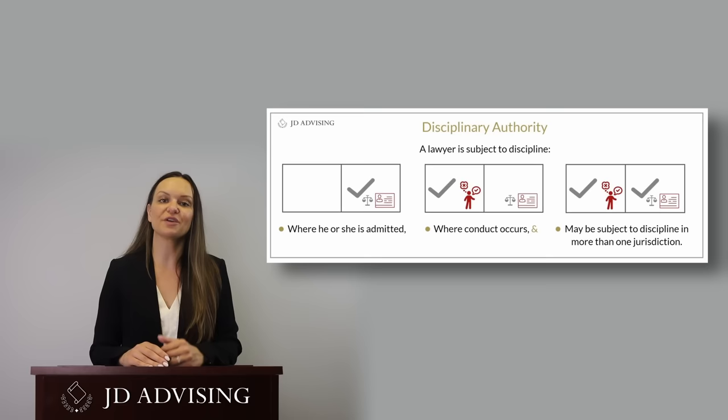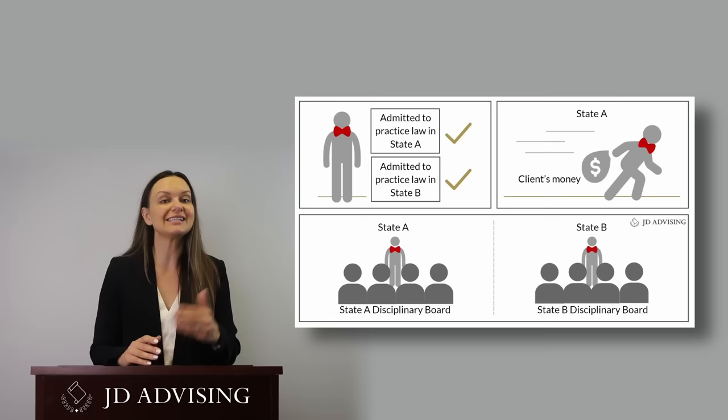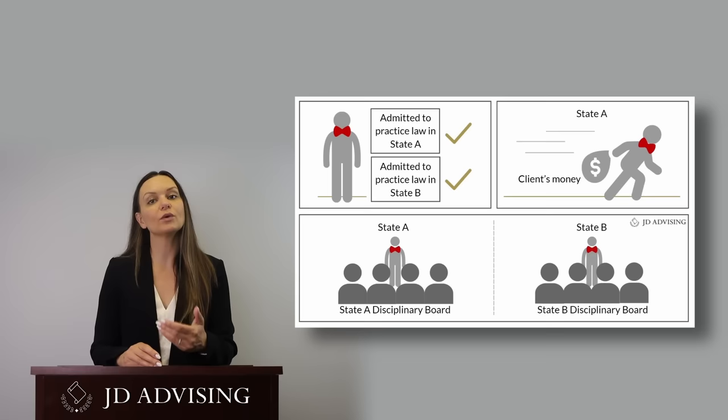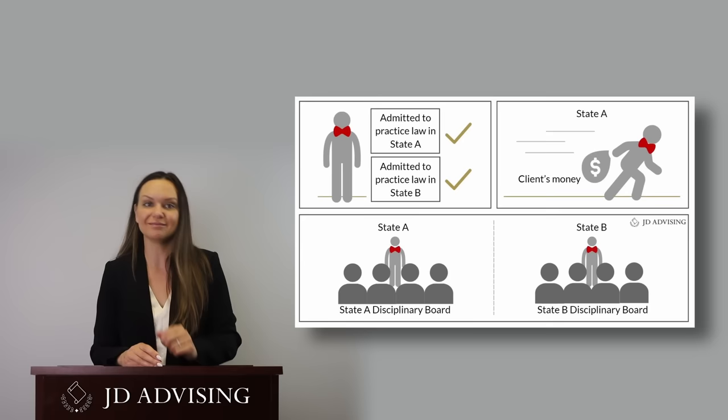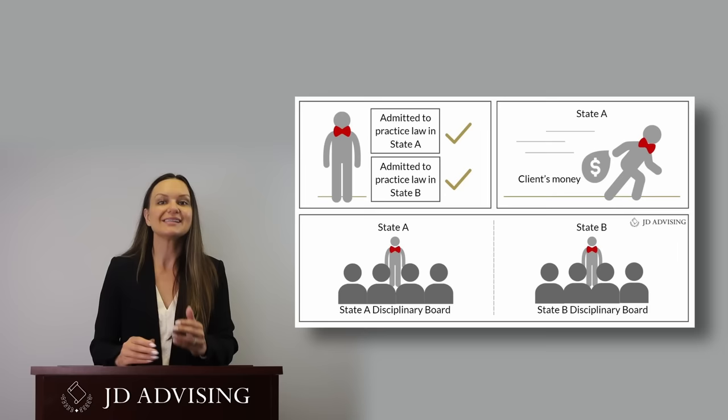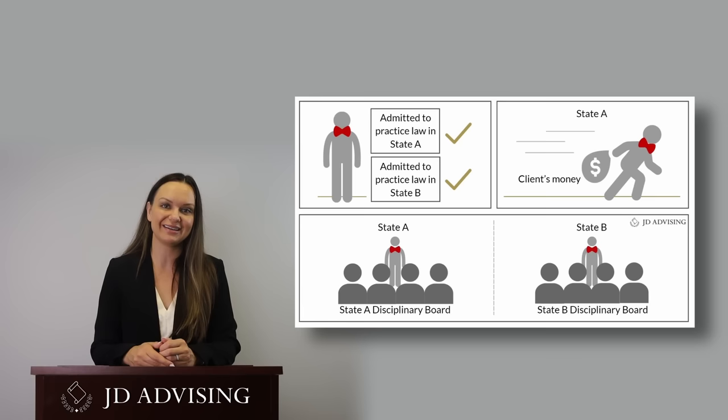The first rule is all about the regulation of lawyers. Lawyers are subject to regulation by each state where they are admitted to practice, regardless of where they are practicing or where the conduct in question has occurred. When it comes to discipline, a lawyer is subject to discipline where he or she is admitted and where their conduct occurs. So a lawyer admitted in States A and B who commits a bad act in State A can be disciplined in both States A and B.